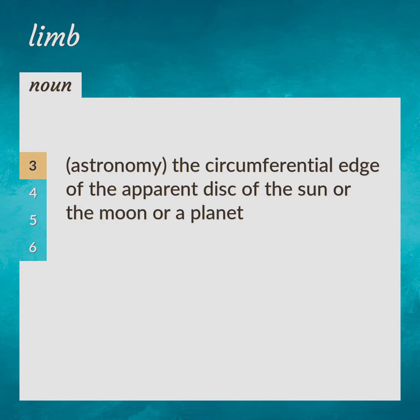Astronomy. The circumferential edge of the apparent disk of the sun or the moon or a planet.